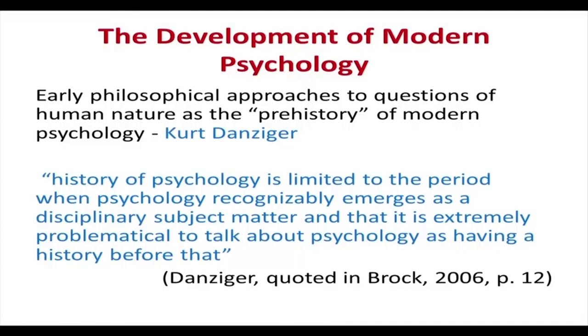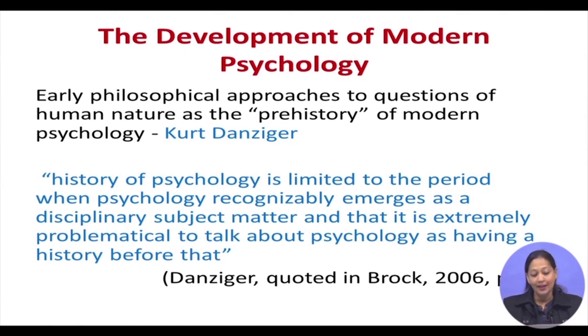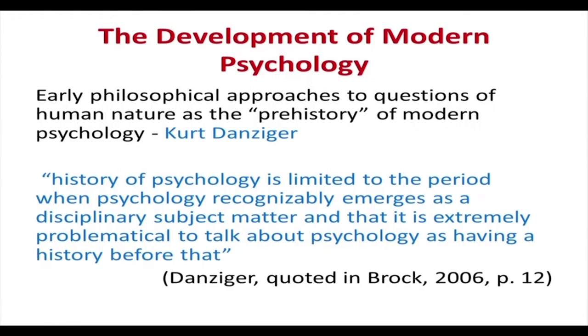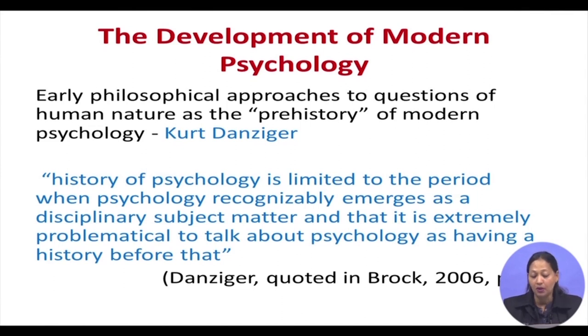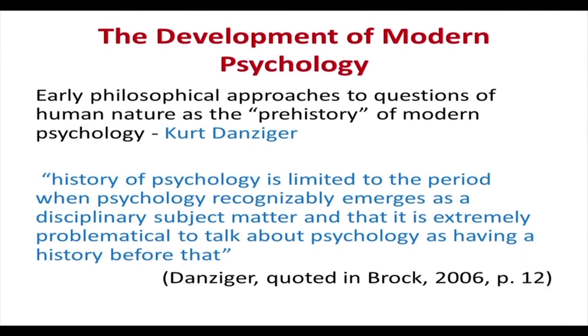Kurt Danzinger, one of the famous historians who covered the spectrum of psychology, says that the early philosophical conjectures and discourses during the fifth century BC and onwards can be considered the prehistory of modern psychology. To quote him, the history of psychology is limited to the period when psychology recognizably emerges as a disciplinary subject matter, and it is extremely problematical to talk about psychology as having a history before that — which is why he refers to psychology having a prehistory.